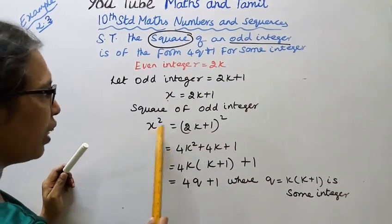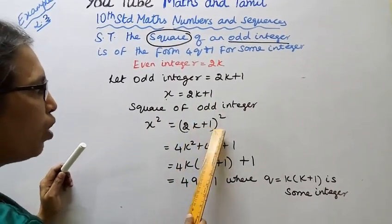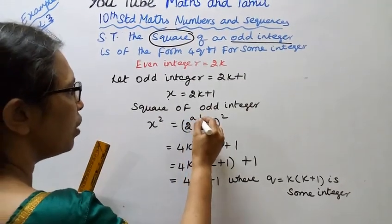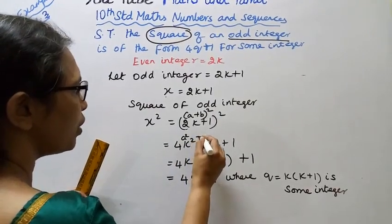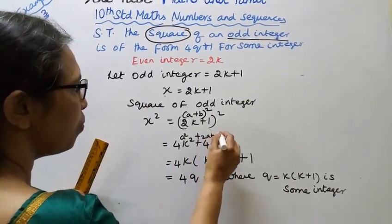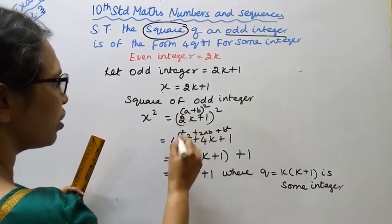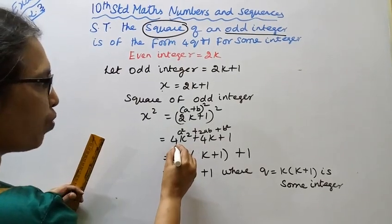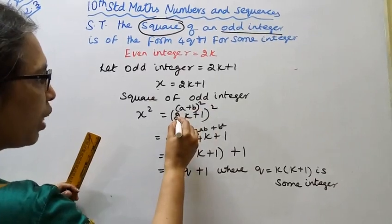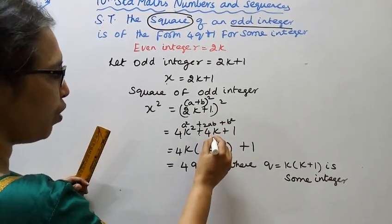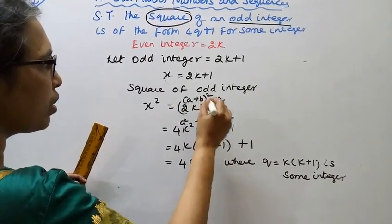Square of odd integer: x squared equal to 2K plus 1 the whole square. This is a plus b the whole square, a squared plus 2ab plus b squared. 2K the whole square is 4K squared, plus 2 into 2K into 1 is 4K, plus 1.